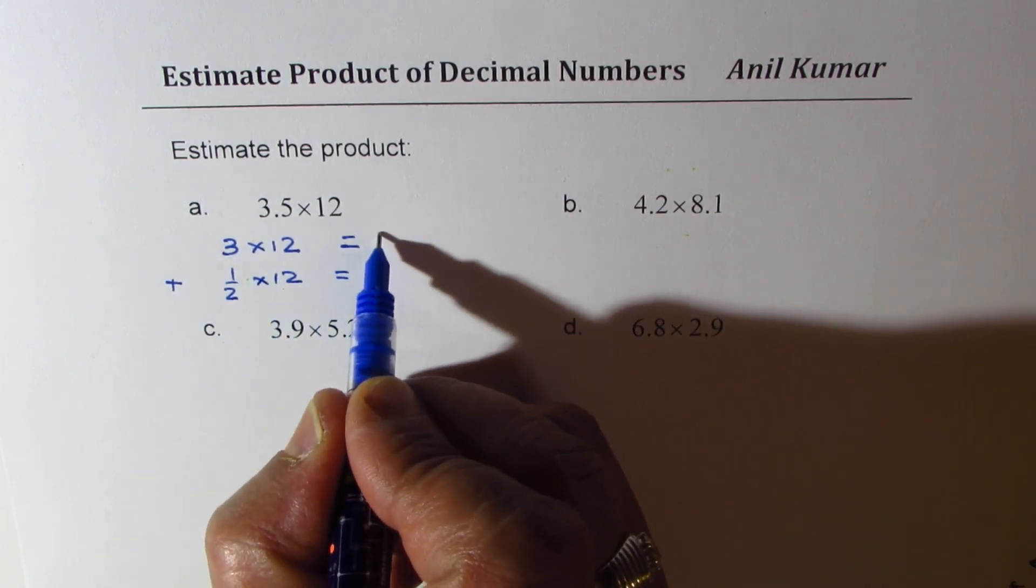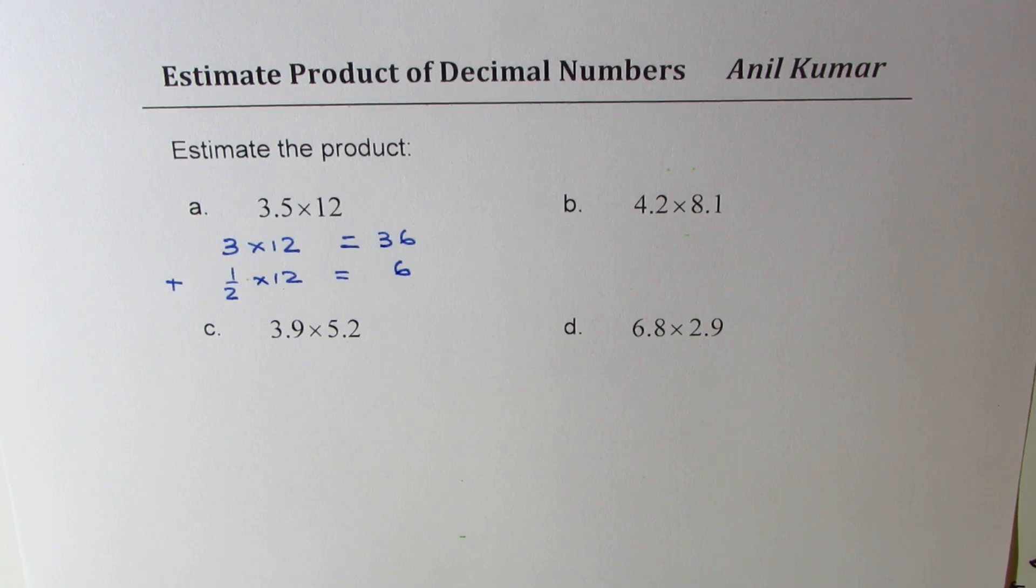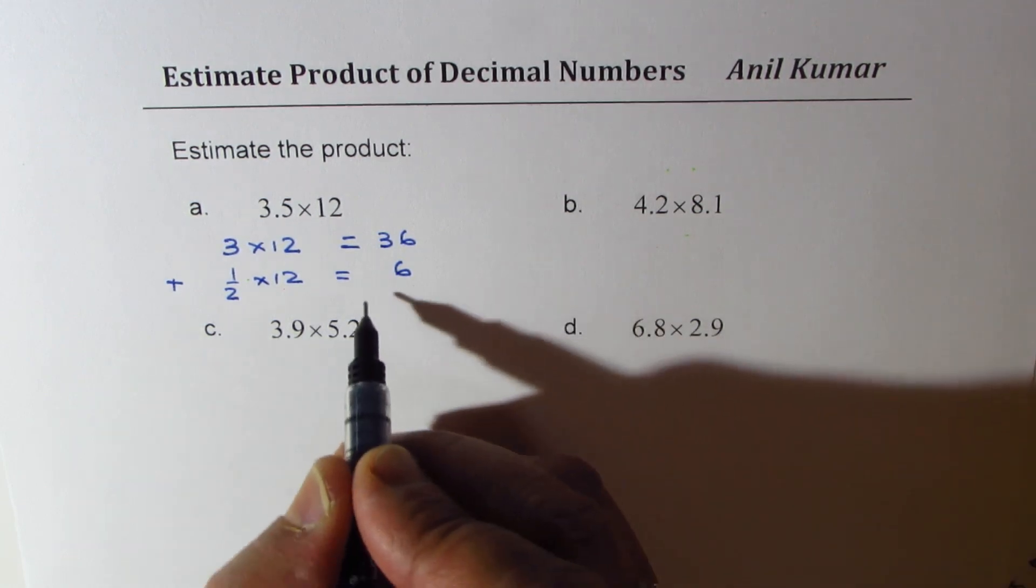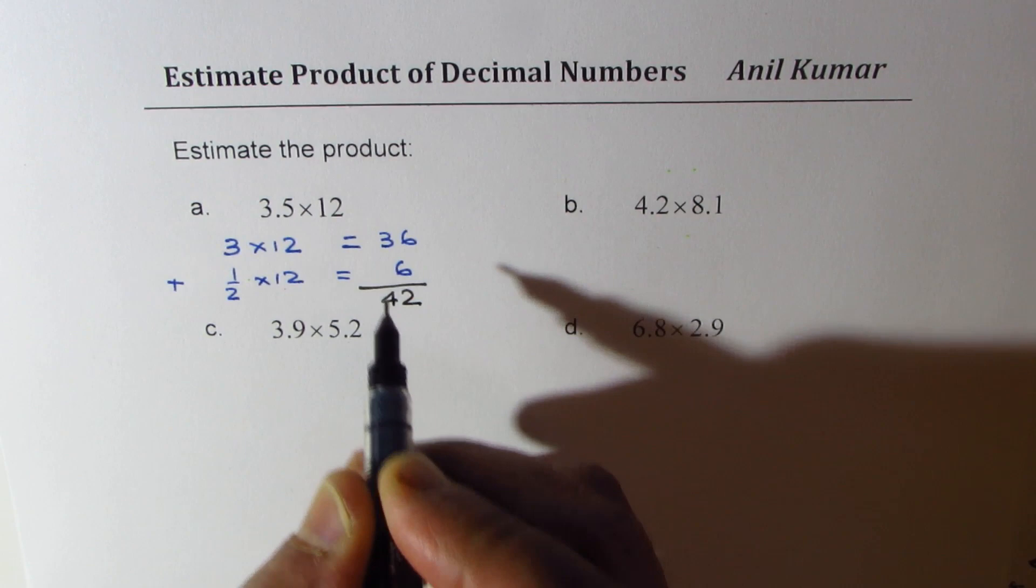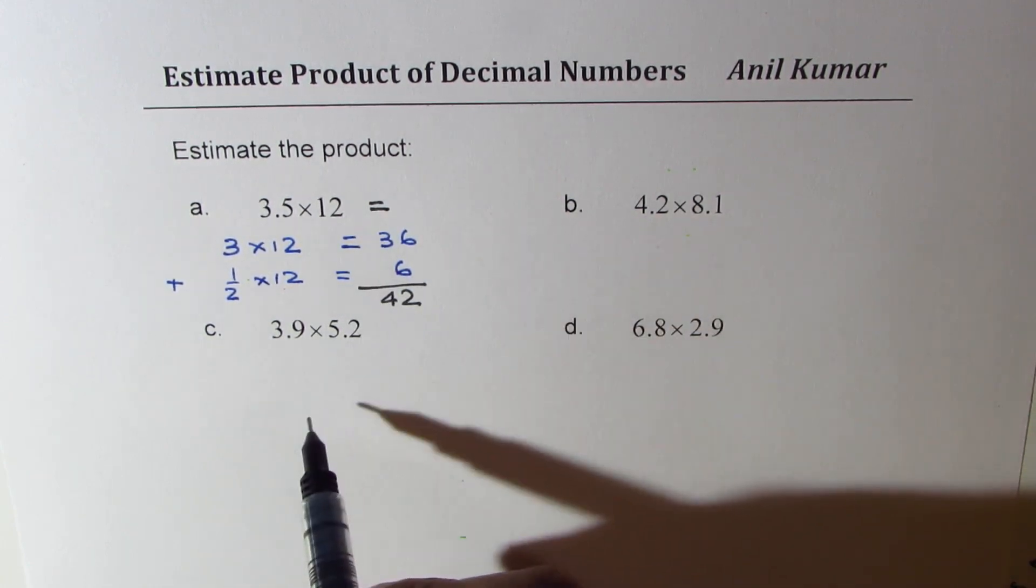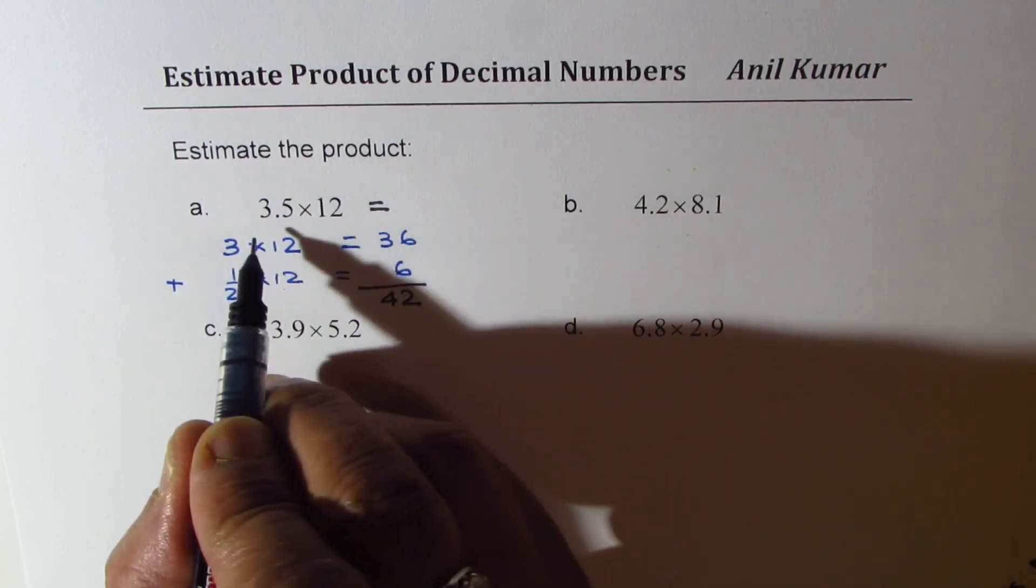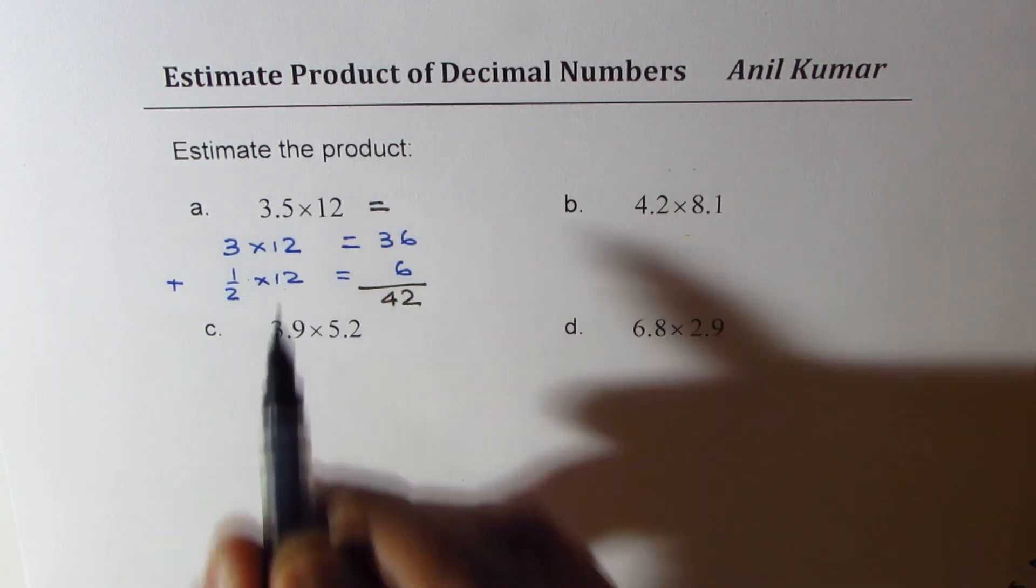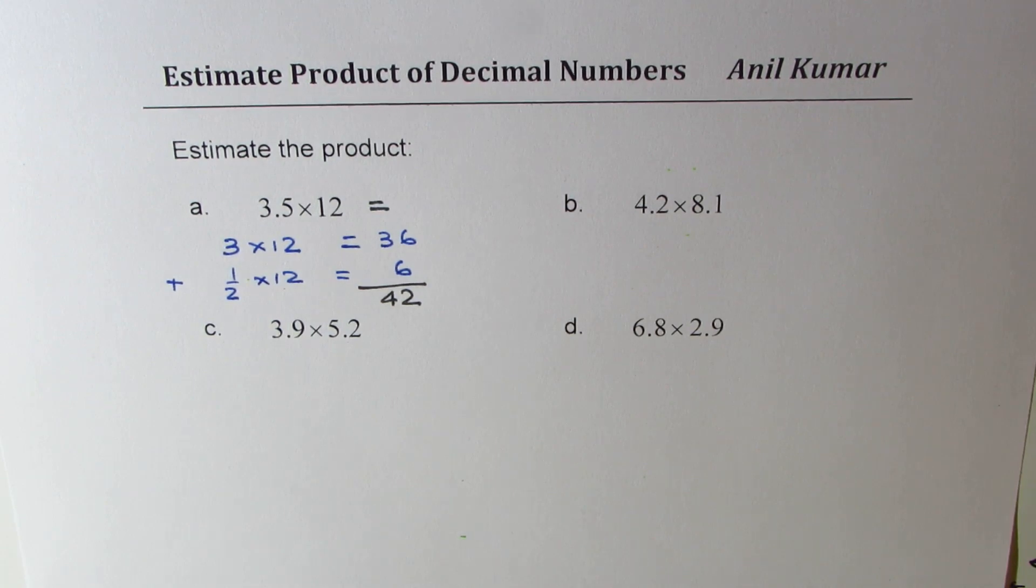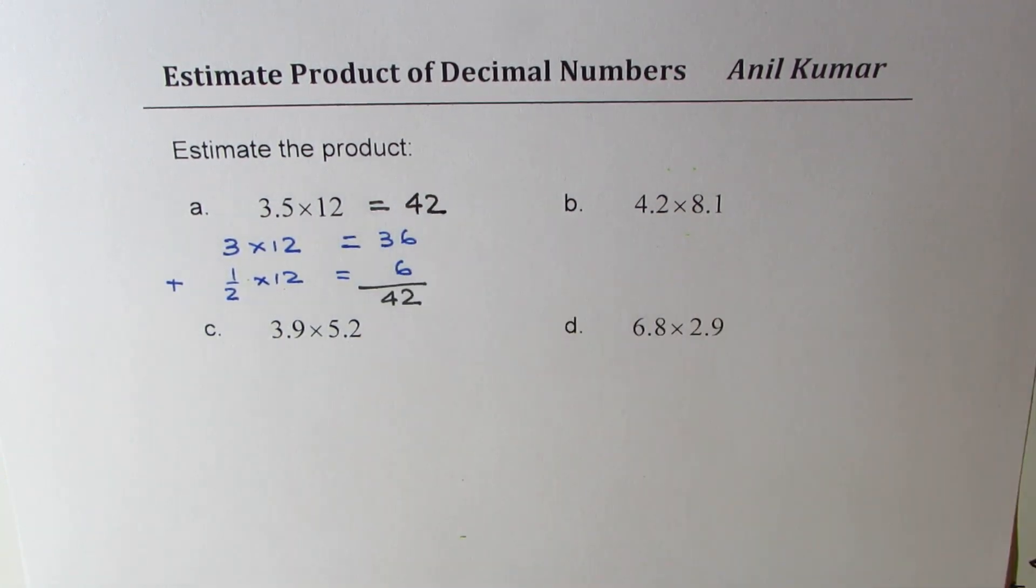3 times 12 is 36. Half of 12 is 6. And when you add them, you get 42. Now, it may be a decimal number. We may be doing estimation, but sometimes you can actually get the exact answer, as we got here, which is 42.